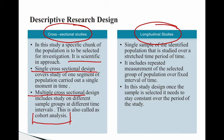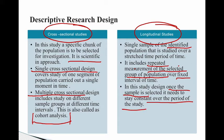In social sciences, longitudinal studies are used specifically in projects where we are observing effects or impact on a particular sample — sometimes even placing them in experiments. It is a study in which a single sample of the identified population is studied over a stretched period of time. It includes repeated measurement of the selected group of population over a fixed interval of time. An important point: when conducting longitudinal studies, the selected sample must remain constant throughout the study period, otherwise it will affect your results.